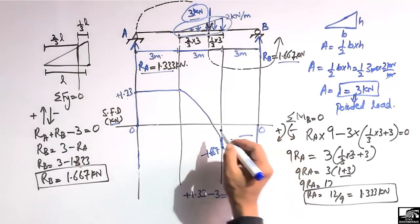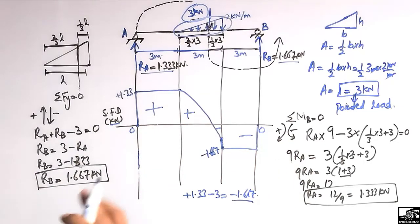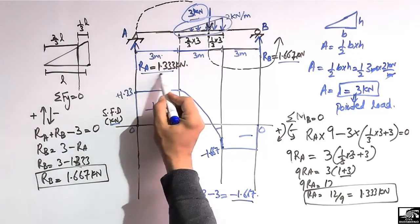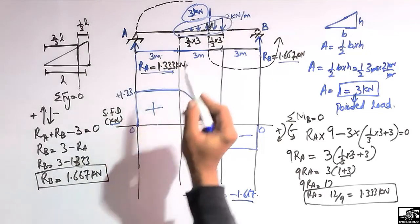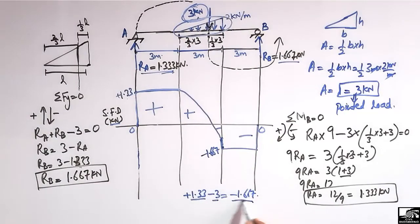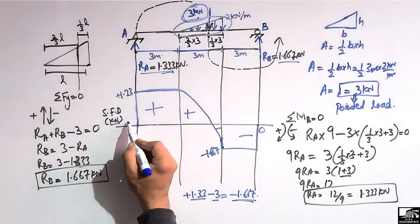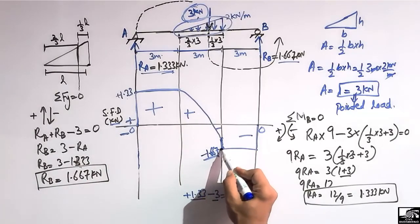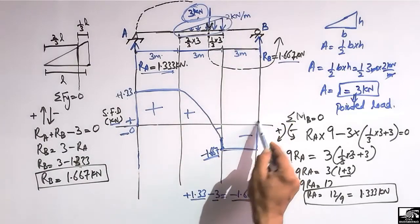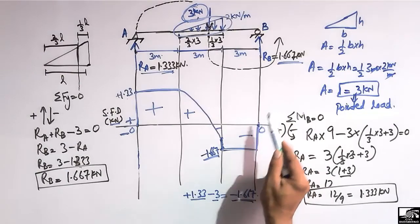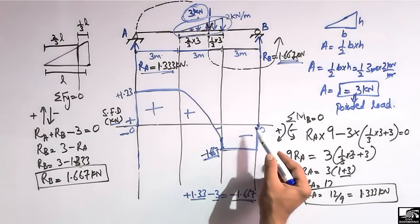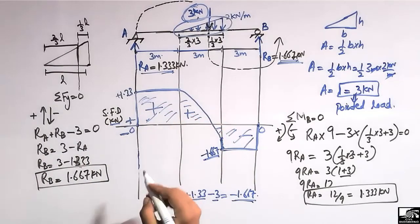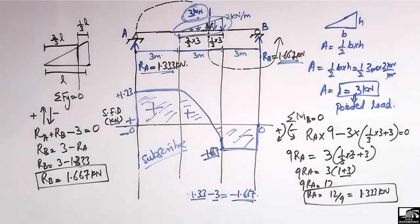Then there is a reaction of 1.667 kilonewtons at B acting upward, so we bring the line back up to zero. This gives a negative shear box and a positive shear box. This is how to draw the shear force diagram for a beam with a triangular load. Hope you guys understand — don't forget to subscribe to our channel for 7 Engineering videos. Thank you for watching.